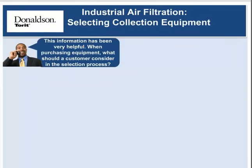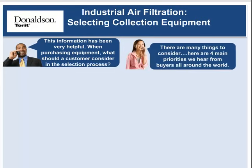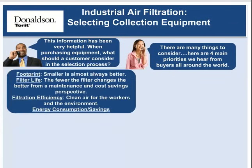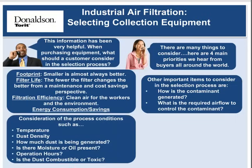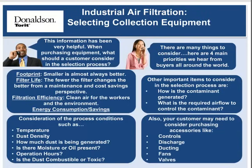When purchasing equipment, customers should consider four main priorities: footprint — smaller is almost always better; filter life — fewer filter changes mean better maintenance and cost savings; filtration efficiency — clean air for workers and the environment; and energy consumption and savings. Other important considerations include how the contaminant is generated, the required airflow to control it, process conditions such as temperature, dust density, how much dust is generated, whether moisture or oil is present, operational hours, and whether the dust is combustible or toxic. Customers may also need accessories like controls, discharge, ducting, fans, and valves.